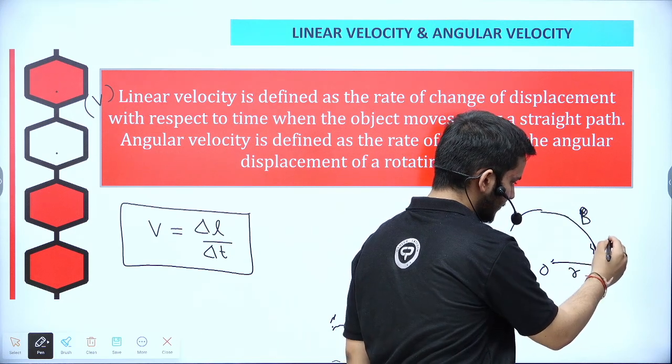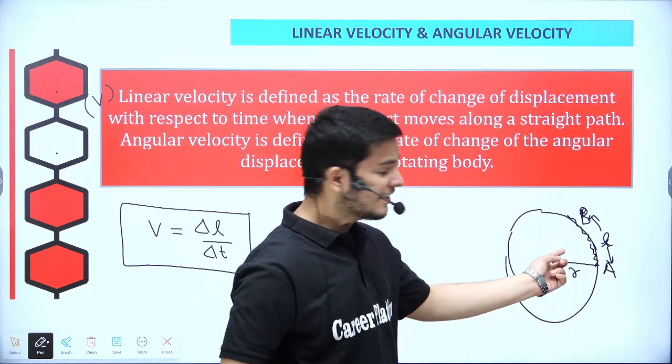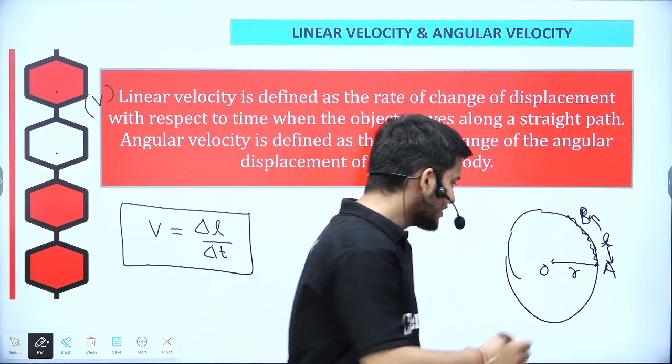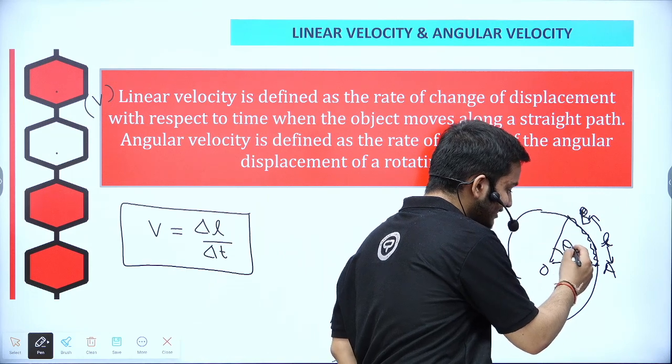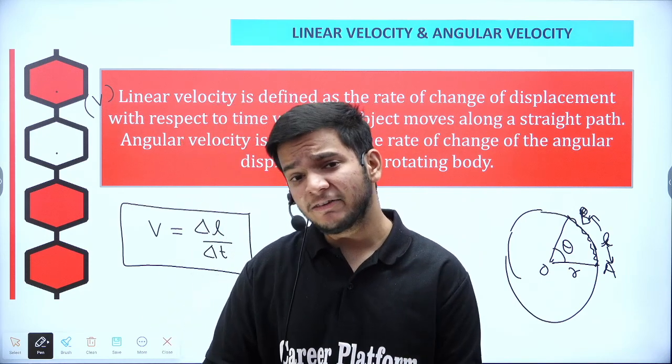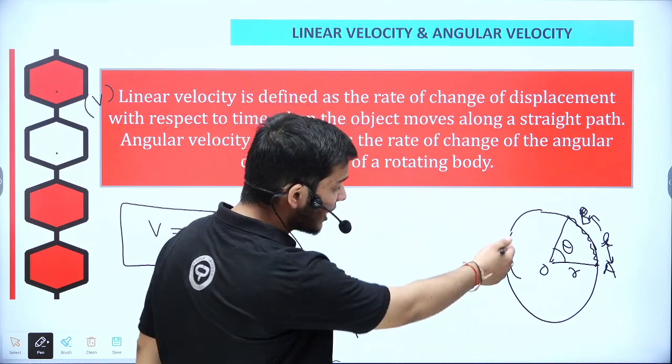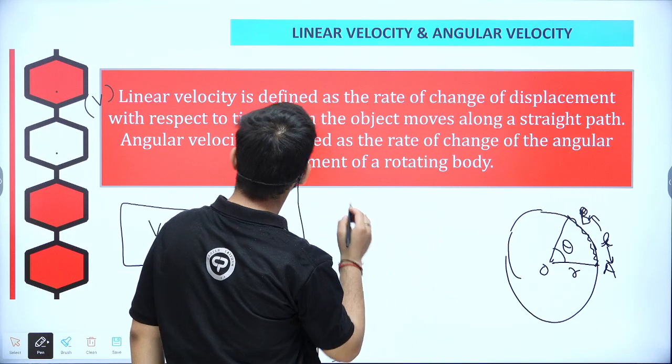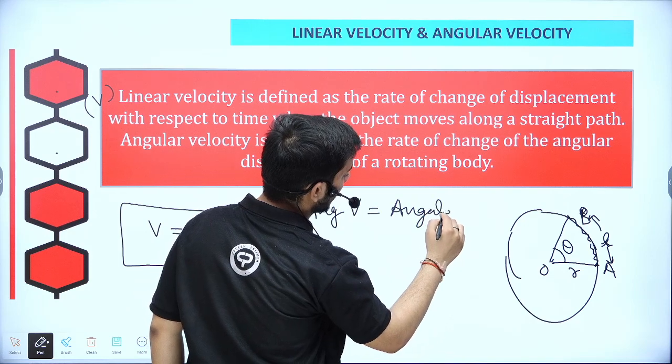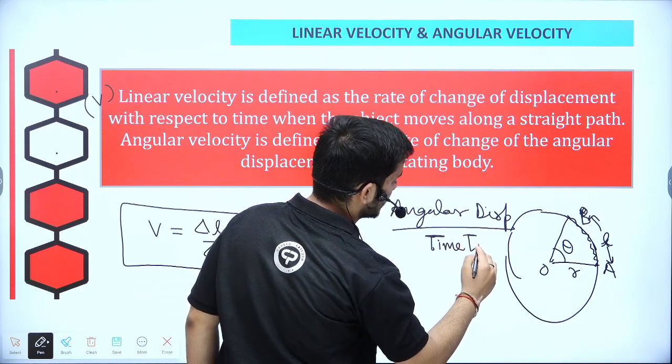But this displacement, a linear straight path to distance move is angular displacement. So my angular velocity, which is angular displacement upon time.